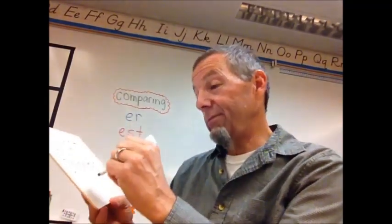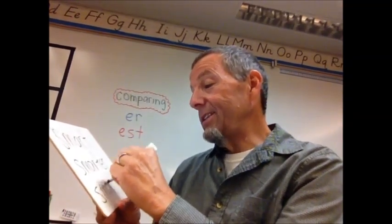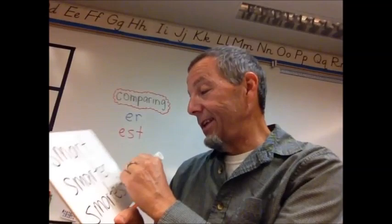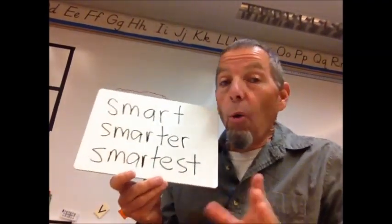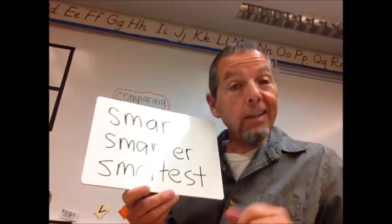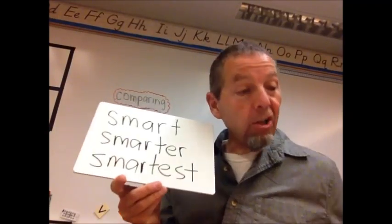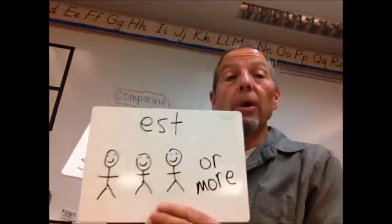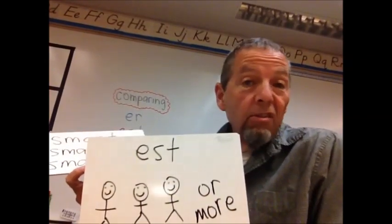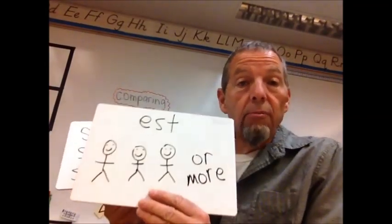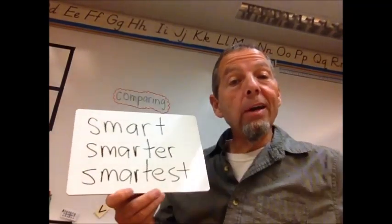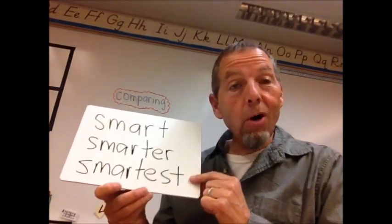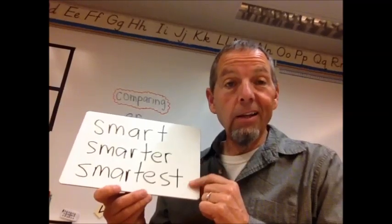Then somebody else moves in. This kid is the smartest kid in all your class. The smartest one. Nobody in your class is smarter than this kid. The smartest. And you're comparing three or more because you got 20 kids in your class, 23, I don't know. So you're gonna use EST because you got three or more. This kid is the smartest kid in the class.